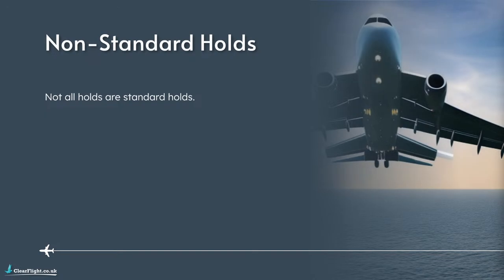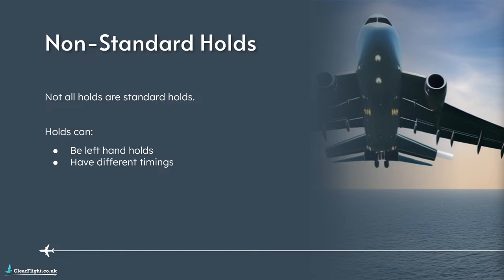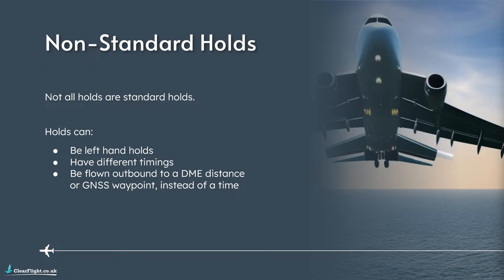Not all holds are standard holds - we do get non-standard holds as well. Non-standard holds can be left-hand holds where you make turns to the left instead of the right. They can have different timings - a hold might be defined as flying outbound for one minute 30 or two minutes. Or with GPS holds, you don't fly outbound for one minute at all; you fly outbound until you reach a certain DME distance or GPS waypoint. The majority of holds you fly will be standard holds, though - the most common non-standard holds are simply left-hand holds, and any differences are always clearly marked on your instrument plates.